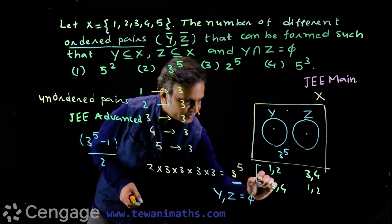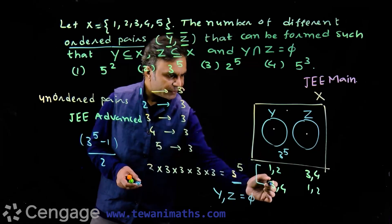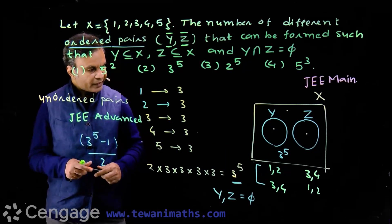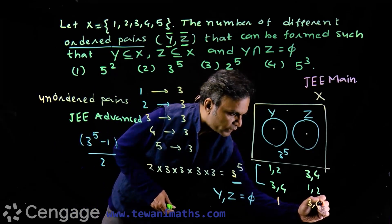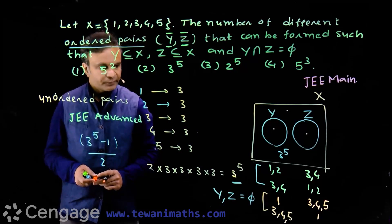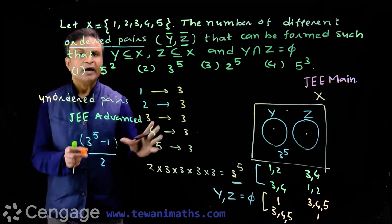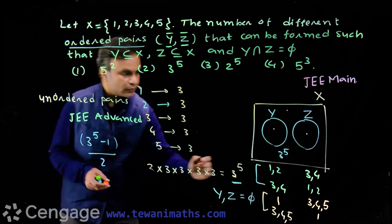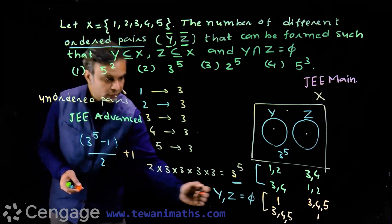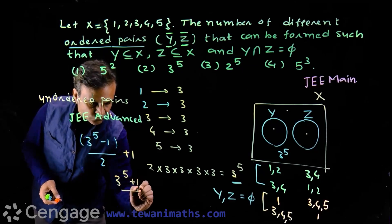For example, one pair has elements 1 and 2 in set Y and elements 3 and 4 in set Z, and the swapped version has elements 3 and 4 in set Y and 1 and 2 in set Z — these two count as one unordered pair. So in the 3⁵ - 1 ordered pairs, every two cases form one unordered pair. Then we add back 1 for the case when both Y and Z are null sets, giving (3⁵ - 1)/2 + 1 = (3⁵ + 1)/2 unordered pairs.